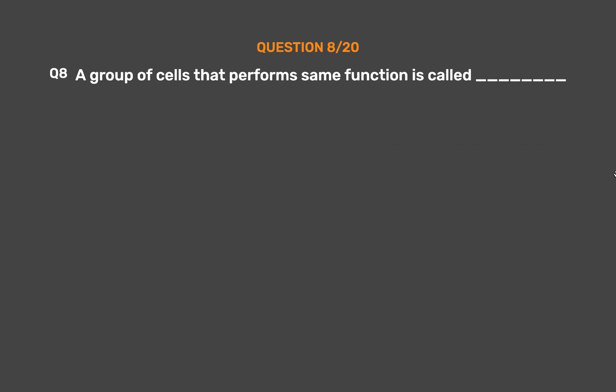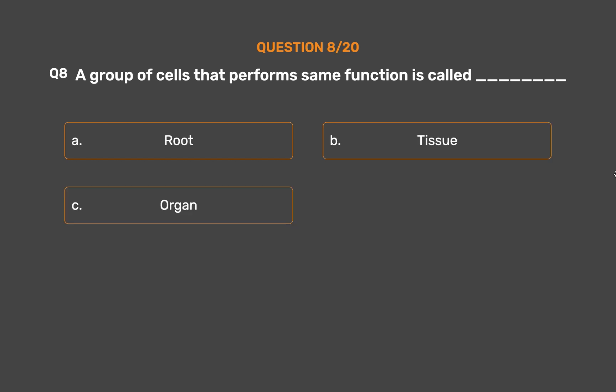Question number 8. A group of cells that performs the same function is called blank. Option A: Root. Option B: Tissue. Option C: Organ. Option D: Stem.